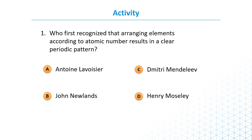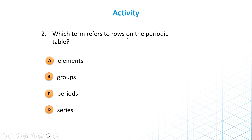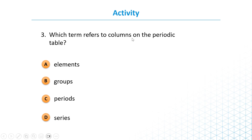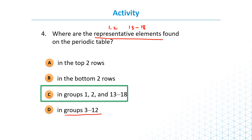You can stop the video before we solve these questions. Who first recognized that arranging elements according to atomic number results in a clear periodic pattern? When you see 'atomic number and arranging,' remember Henry Moseley. Which term refers to rows on the periodic table? We call them periods. Which term refers to columns? We call them groups. Where are representative elements found? Groups 1, 2, and 13 to 18. Groups 3 to 12 are transition metals. Silicon and germanium are examples of metalloids. Alkali metals are Group 1 elements; halogens are Group 17 elements.